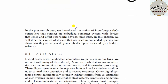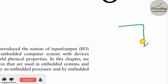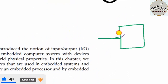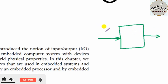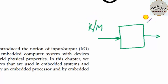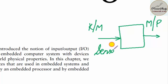The first topic is I/O devices. A microcontroller or microprocessor needs input devices as well as output devices to interact with the outside world. For a laptop, keyboard and mouse are examples of input devices, and monitor or printer are output devices. In an embedded system, a sensor or transducer is an input device.